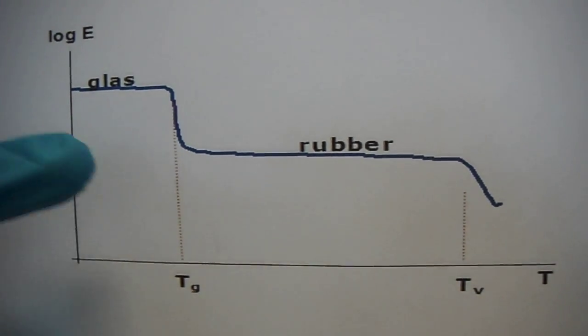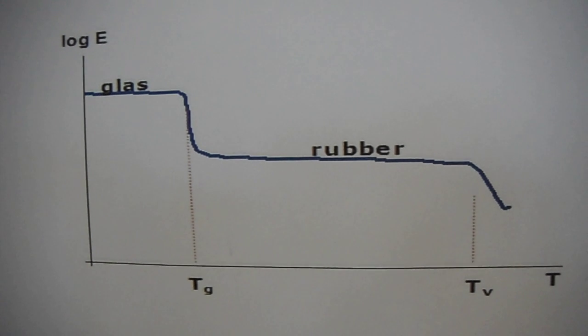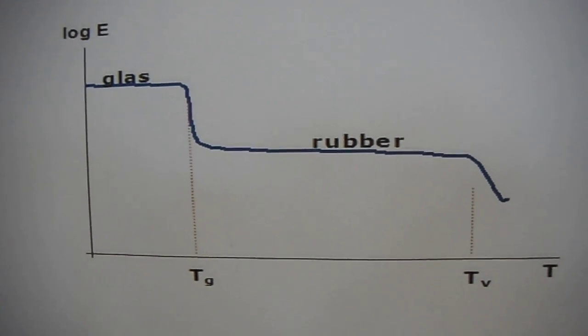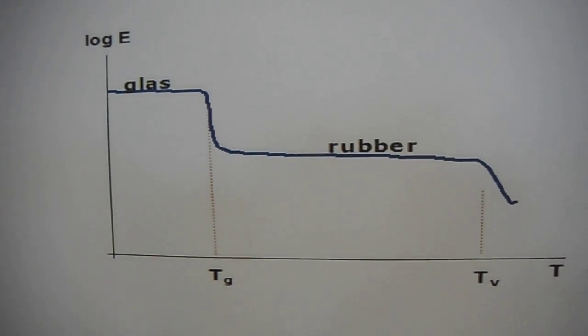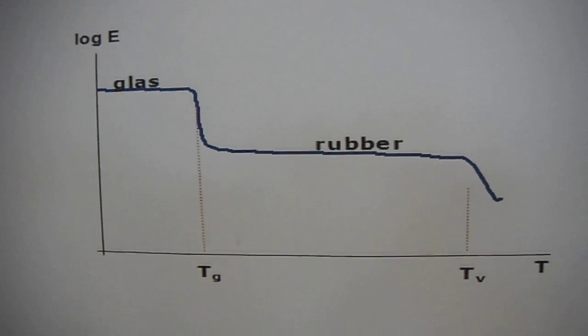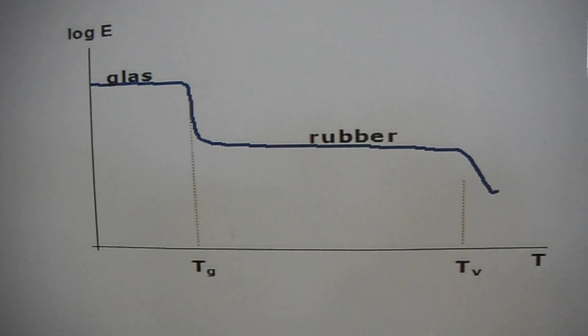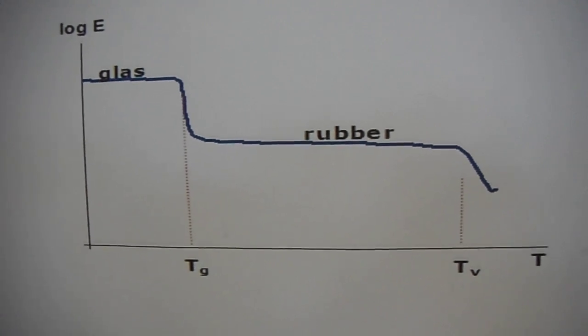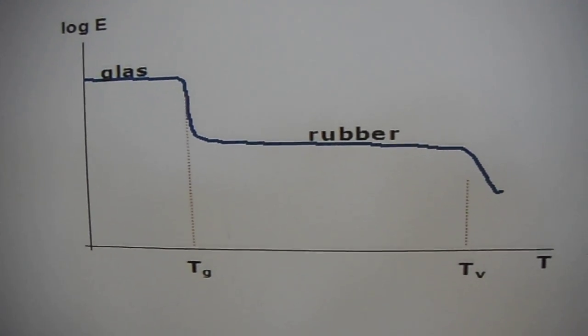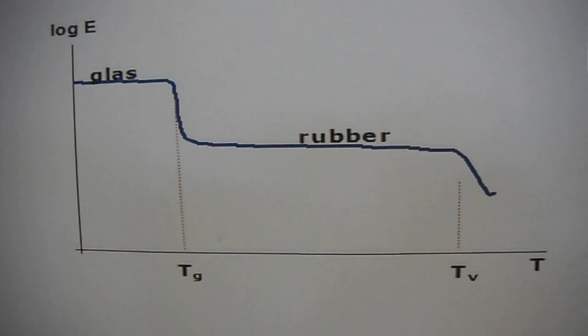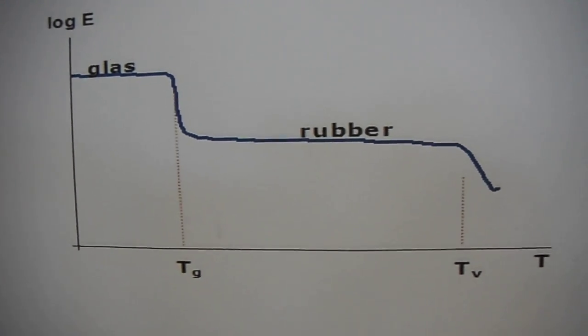To go from the glass to the rubber state, the glass transition temperature, the TG, has to be passed. This is the temperature where the polymer goes from the glass to the rubber state. It depends on the chain stiffness and the attraction between bonds. The TG of polystyrene is about 100 degrees Celsius.